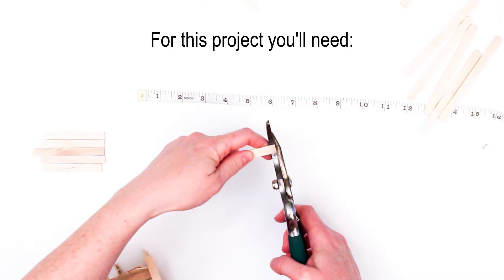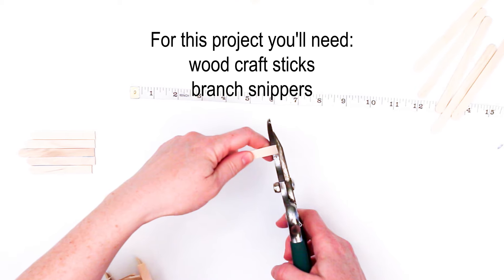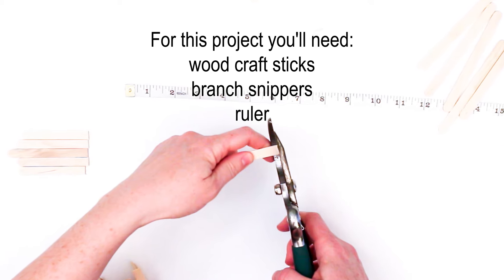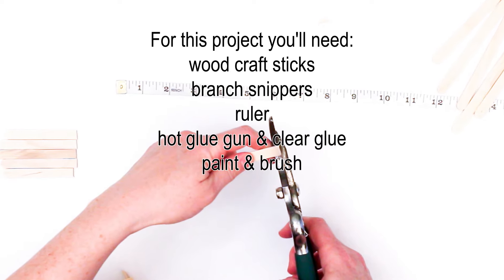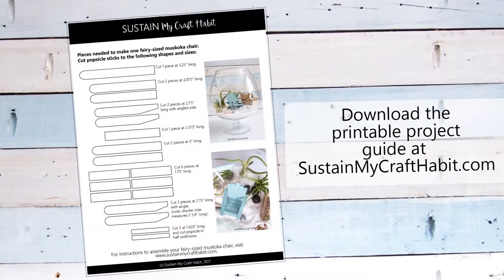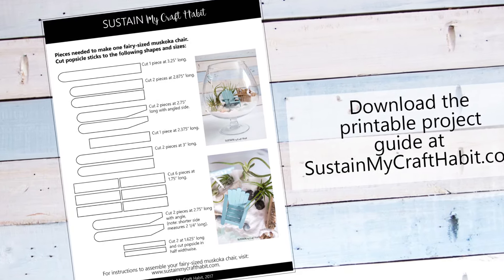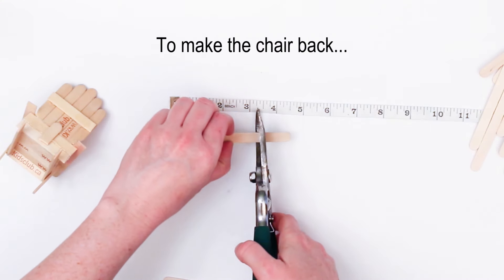For this project you'll need wooden craft or popsicle sticks, branch nippers, a ruler or measuring tape, hot glue gun with clear craft glue, paint and a paintbrush, and then our printable project guide which you can download from sustainmycrafthabit.com.